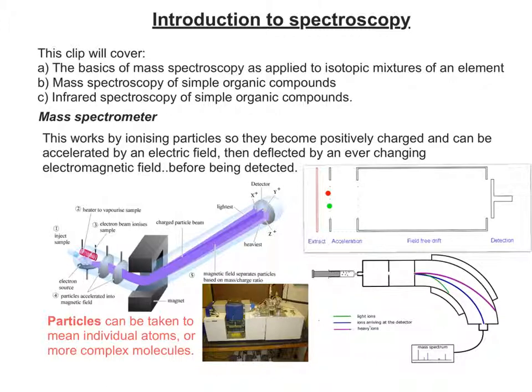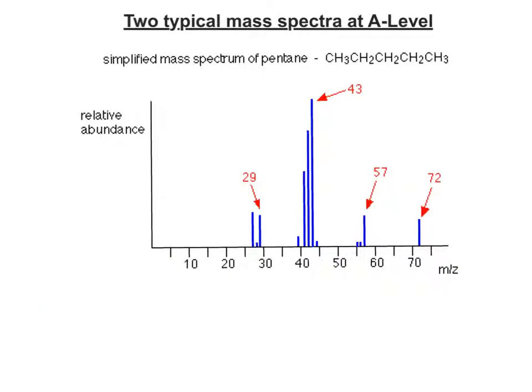Let's have a look at a mass spectrum in more detail. There's actually two possible different types you can come across at A-level. One possible mass spectrum would be that of an organic compound, a simple one such as pentane. What happens is when the pentane molecules go into the mass spectrometer, they're fragmented, they're broken up by the electron beam.